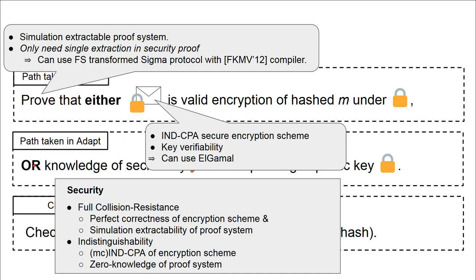In the security proof itself, for full collision resistance, we also require that the encryption scheme is perfectly correct and that we have simulation-sound extractability. For indistinguishability, we require the already said IND-CPA security of the encryption scheme and the zero-knowledge property of the proof system. To be perfectly honest, in the paper we use a multi-challenge version of the IND-CPA definition, but it was shown that mC IND-CPA is polynomially equivalent to standard IND-CPA by Bellare et al., so there is no cheating here.